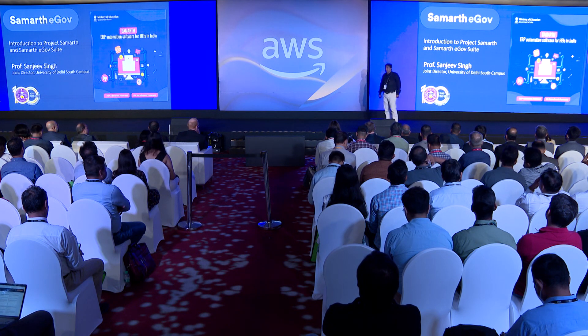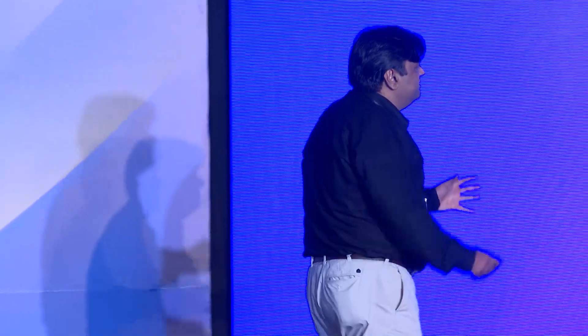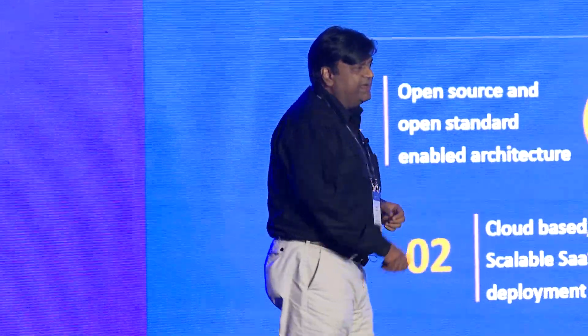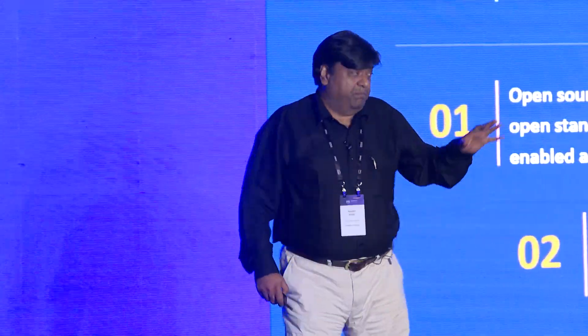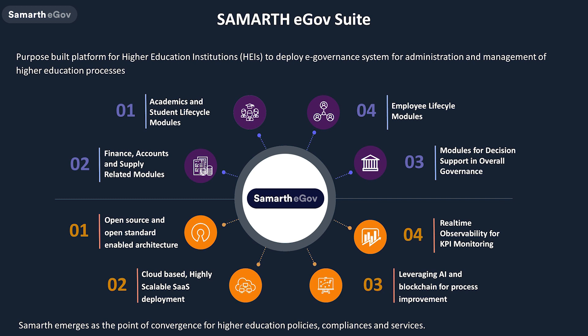After some time, we thought we need to build an enterprise system with clear feedback from all stakeholders. The research students in my lab sat together, created the framework, and we started working on it. That was the beginning of the project called Samarth — a governance automation system especially designed to cater to the diverse needs of higher education in India, covering finance, accounts, academics, employee life cycle, and student life cycle. It was built entirely on open source and open standards.